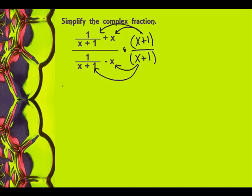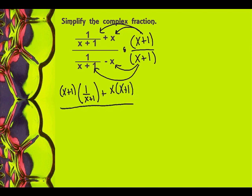So this is what it's going to look like: x plus 1 times 1 over x plus 1, plus x times x plus 1, divided by x plus 1 times 1 over x plus 1, minus x times x plus 1. And now it's a matter of simplifying.